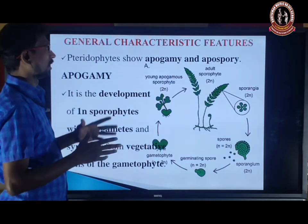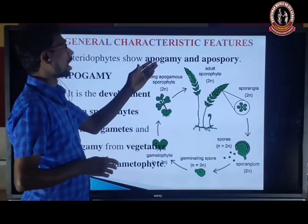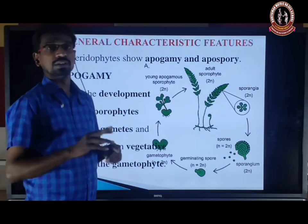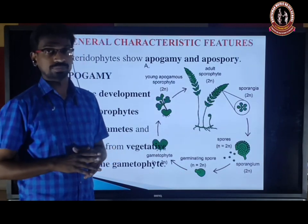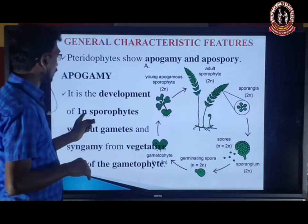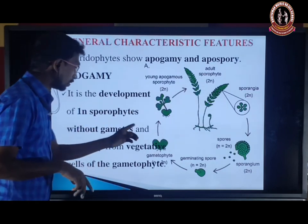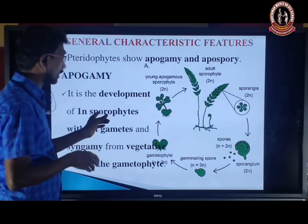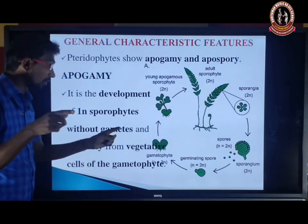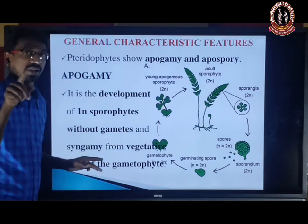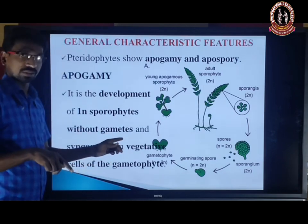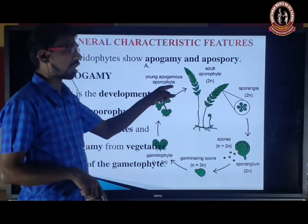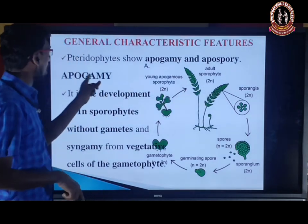Another type of reproduction is apogamy and apospory. Apogamy means away from — or without — fusion of gametes. It is the development of a haploid sporophyte without gamete fusion. From the vegetative cells of the gametophyte (prothallus), it develops into a haploid sporophyte — that is apogamy.